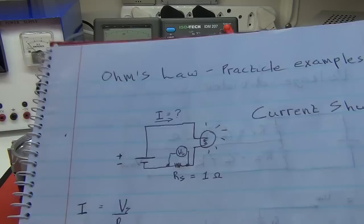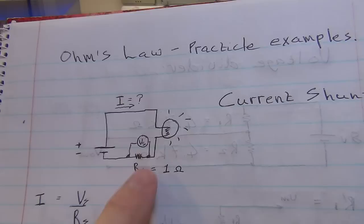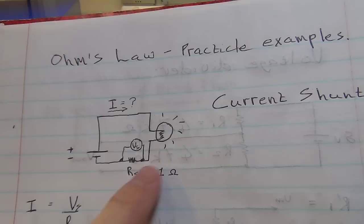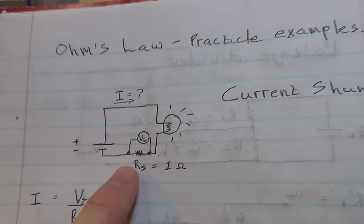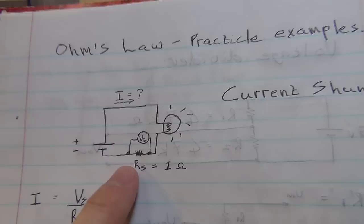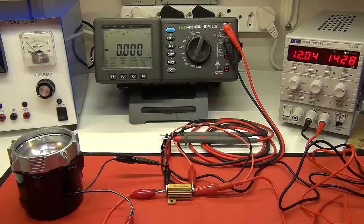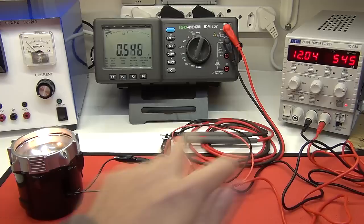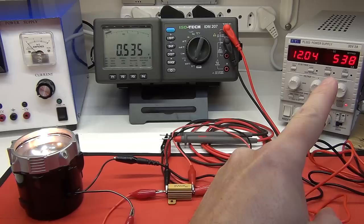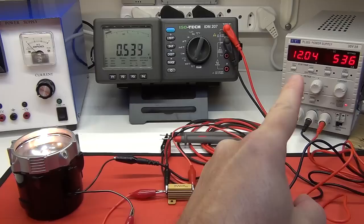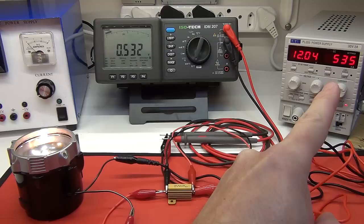I'll quickly show you what the circuit diagram looks like. Here is the load — the light bulb. We want to understand what current is flowing through the circuit. We've got our power source — the variable power supply set to 12 volts — and then we've got our 1-ohm resistor, RS for resistance shunt, with the multimeter set across it. Let's switch on the power supply. The supply is showing 12 volts and about 535–536 milliamps.